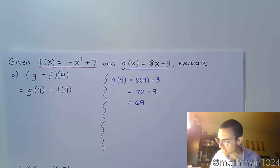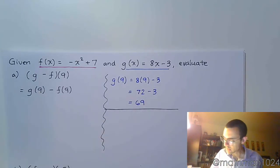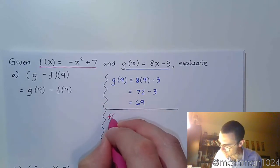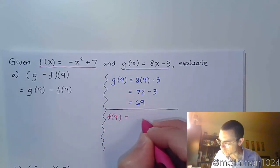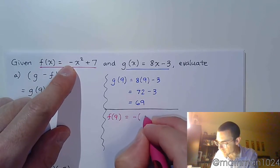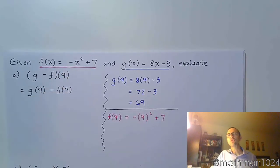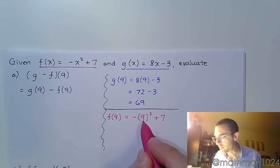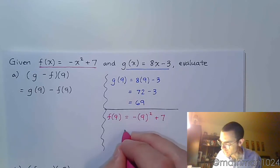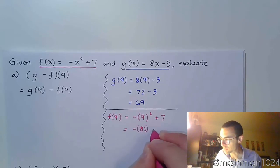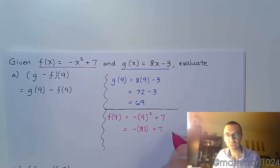So f of 9 equals negative parentheses 9 squared plus 7. Please make sure that you pay very close attention to what the square is touching. The square is only going to affect the 9, the square does not affect the negative. So here we get negative 81. Even if you did keep parentheses on it, you would still see that that's what it means. So negative 81 plus 7 is negative 74.